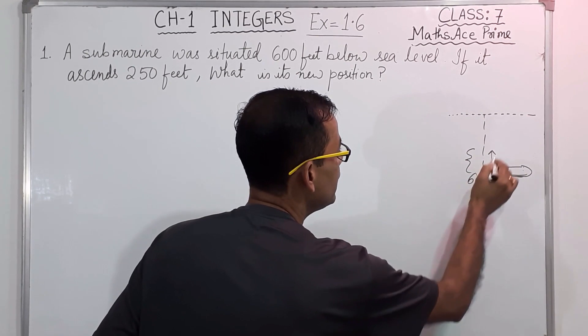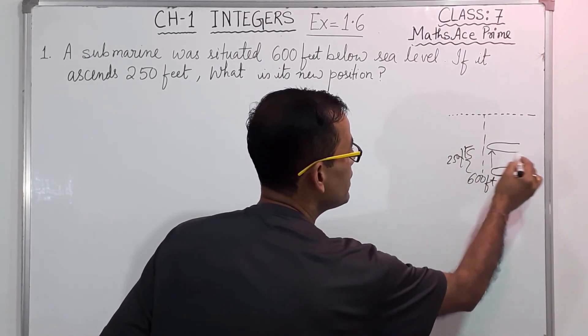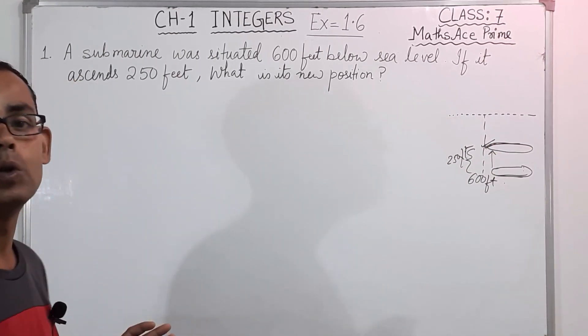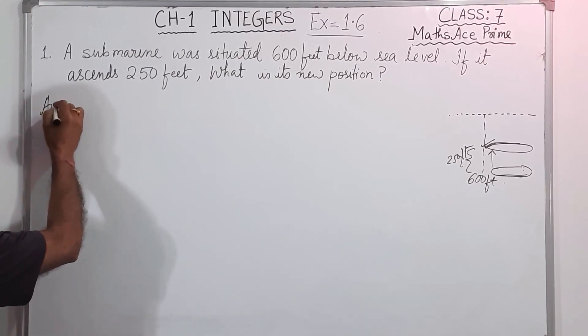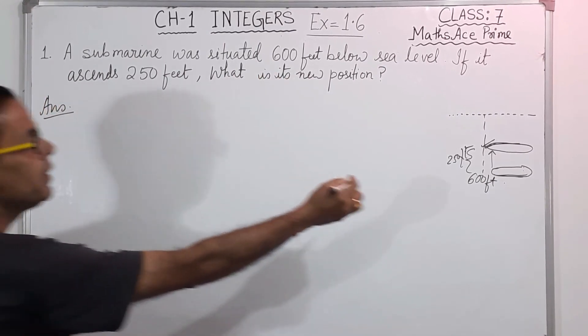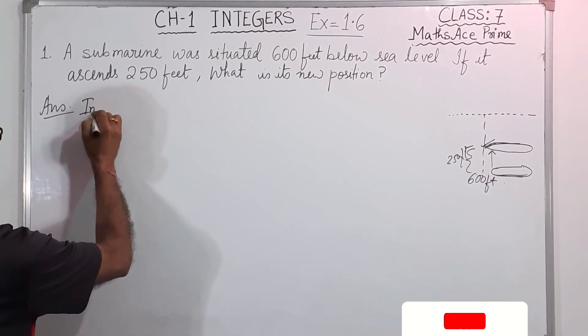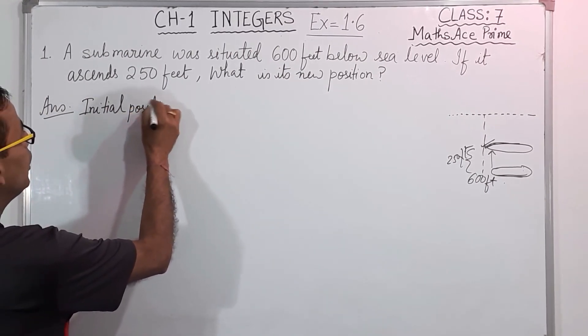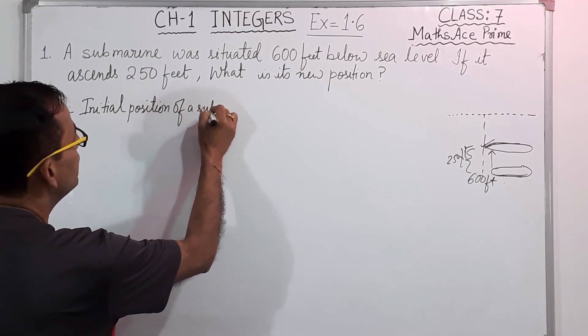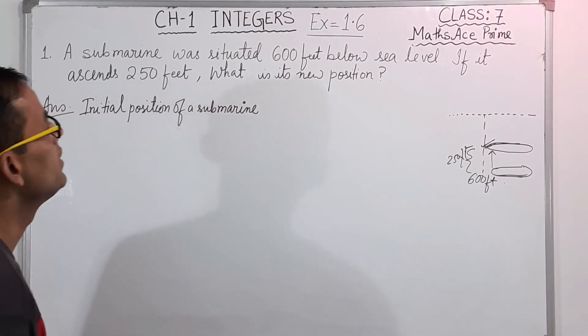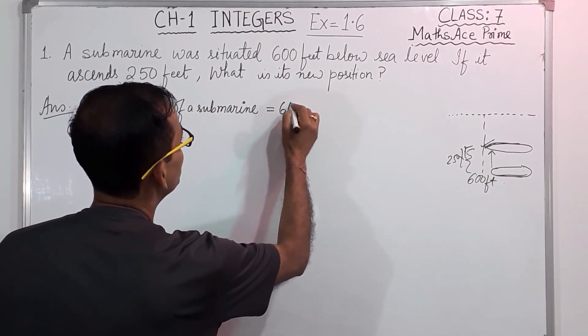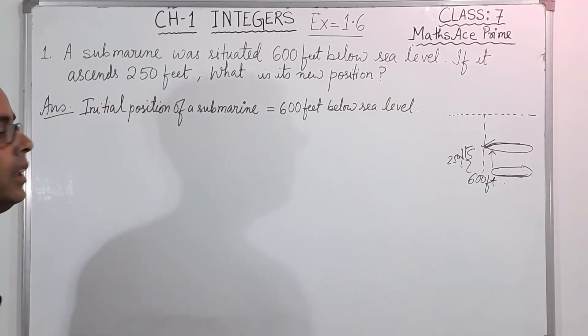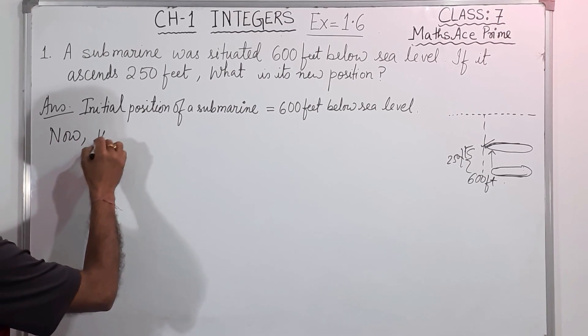Okay, and the submarine is here. Clear? Now this is the submarine and it is how much feet? 600 feet. Okay, and it ascends means goes upside. How much feet it goes upside? 250 feet. Clear? And the submarine is now here. So what is its new position? You have to find out now the submarine is how much feet below the sea level.